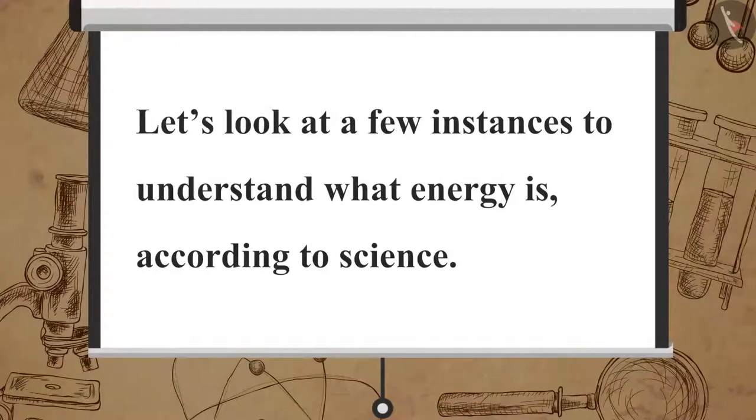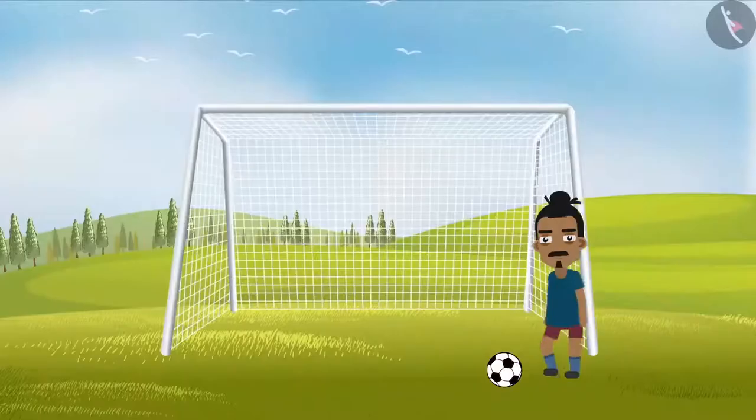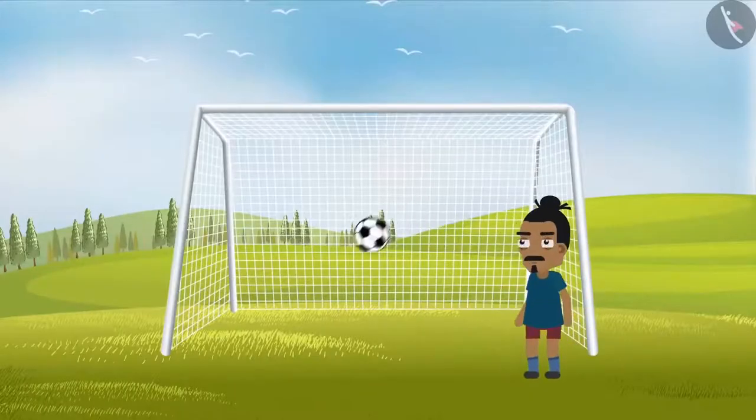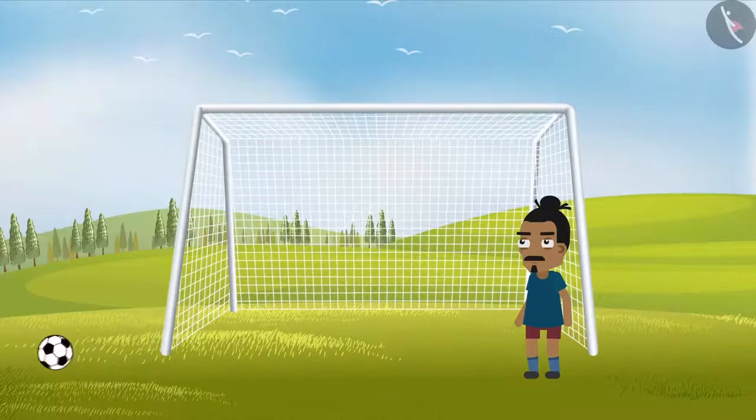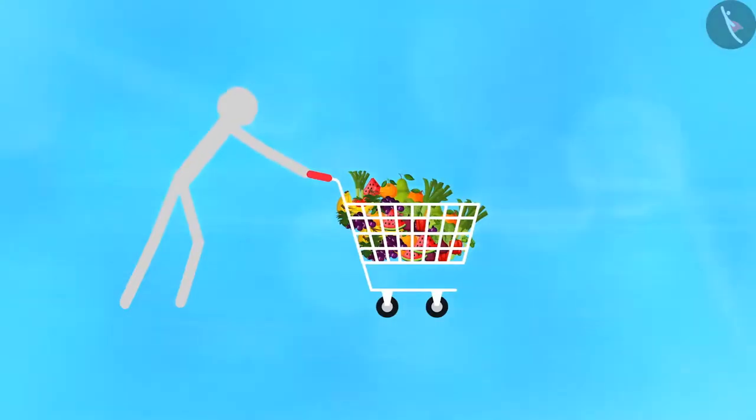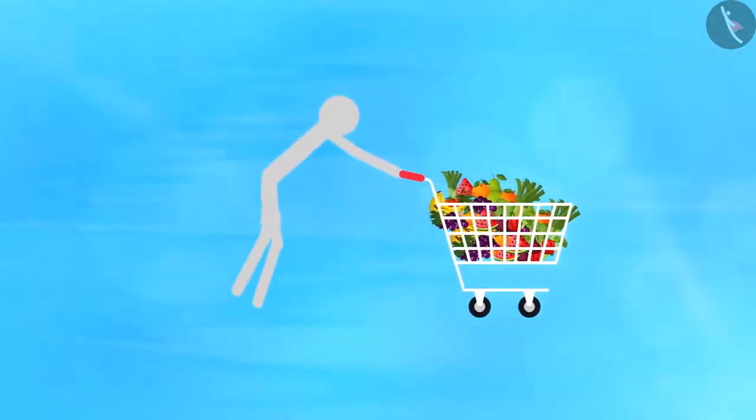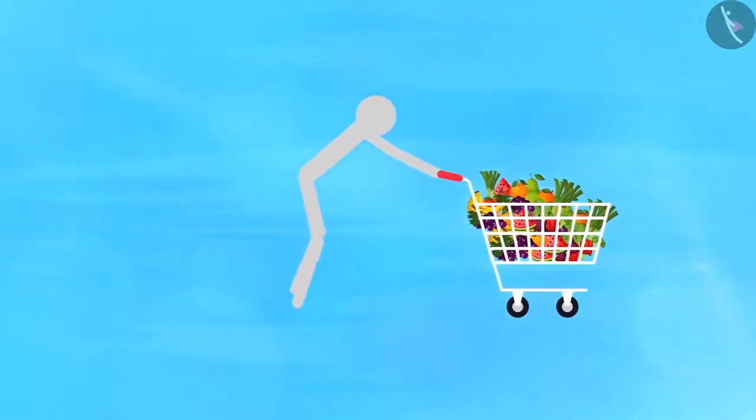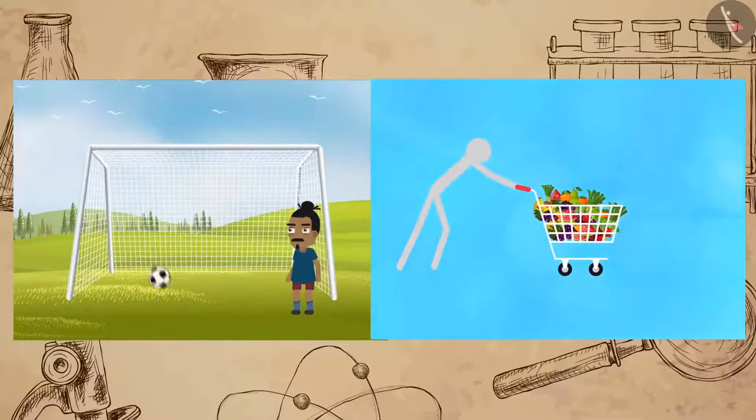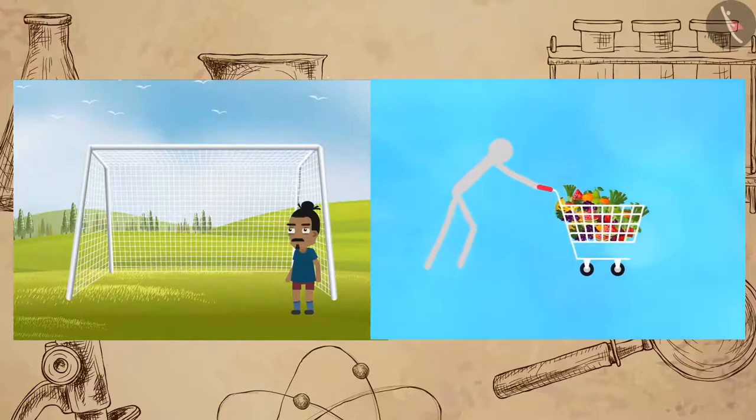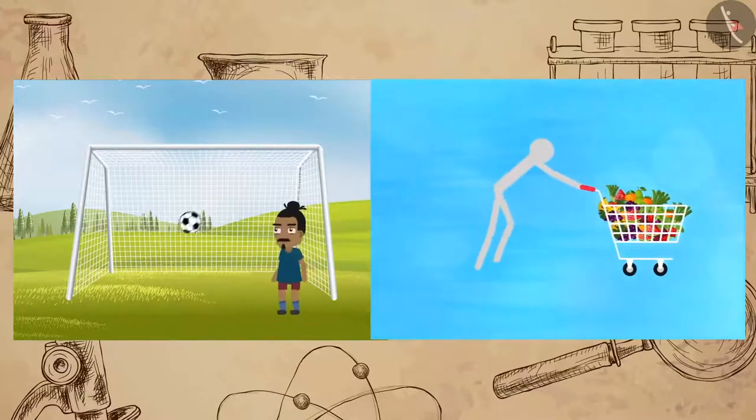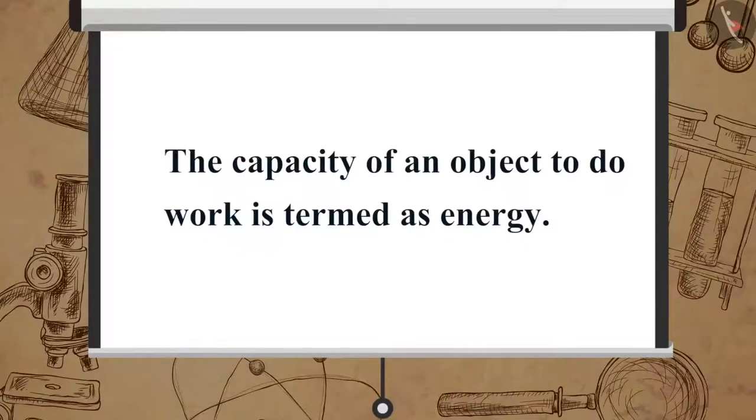Let's look at a few instances to understand what energy is according to science. Suppose you kicked a football and it rolled on the ground, or you pushed a trolley and it displaced up to a certain distance. In both of these situations, the object has acquired capability to do work.